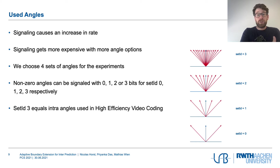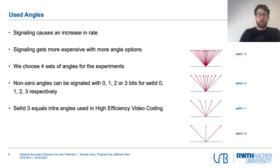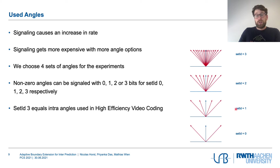The angles used are displayed in the figure, showing the different sets we tried. Because signaling increases the rate and more angle options make signaling more expensive, we chose four different sets of angles. The largest set comprises the HEVC intra angles requiring three bits for the index, and we then reduced the set to require two, one, or even zero bits for signaling the index. Of course the sign bit always needs to be transmitted.